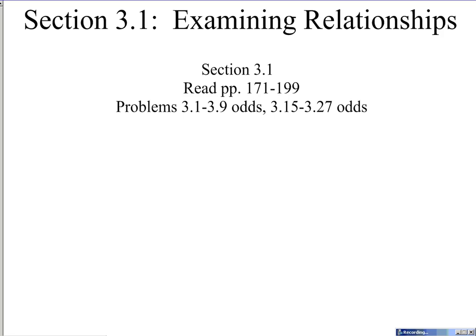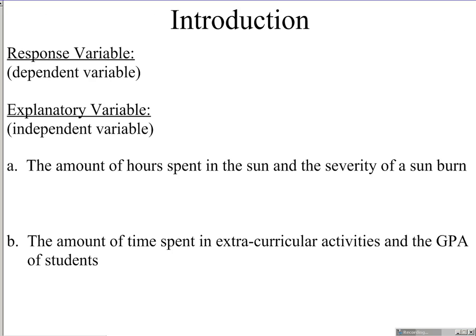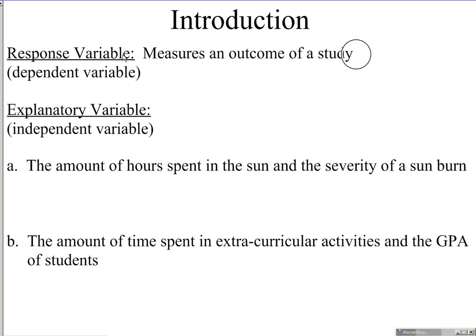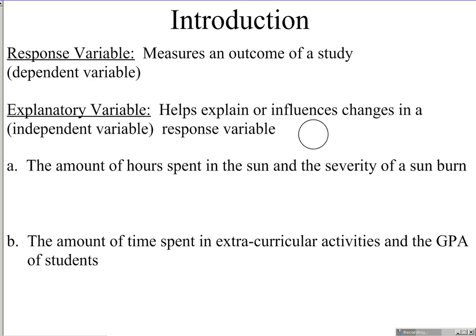Section 3.1: Examining relationships. Starting out with some definitions. A response variable is simply the measure of an outcome of a study. In science classes, this will sometimes be called the dependent variable. An explanatory variable is the variable that helps explain or influences a change in the response variable. In science classes, that may be called the independent variable. In stats, we will use the terms response variable and explanatory variable.